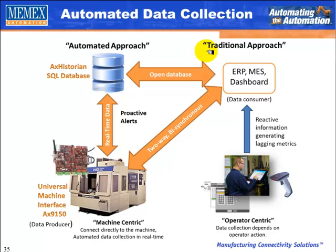We do that with our Universal Machine Interface, the AX9150, which is a data producer. It takes that information in real-time via a two-way asynchronous link and connects to MRP systems, ERP systems, MES systems, and our dashboard for overall reporting, as well as storing that information in a historical SQL database for ease of access and overall reporting over time.